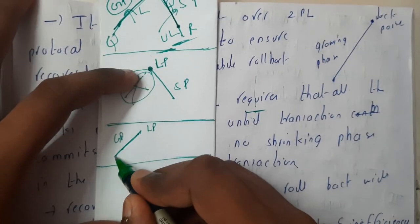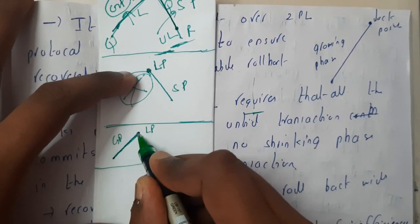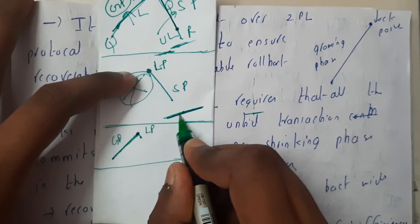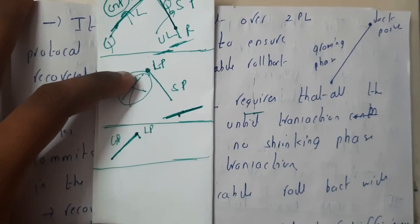Initially we apply locks according to our requirement, but there's no need to unlock them. Once the transaction completes or the requirement is satisfied, it automatically commits.